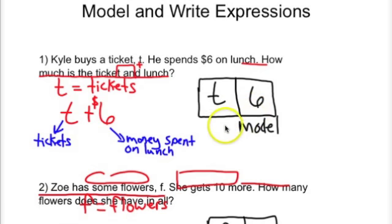So we joined the T and the 6 together. This shows that the variable and the amount of money he spent on lunch were joined. And this is how we would model T plus 6.